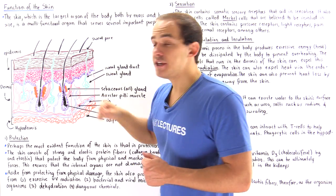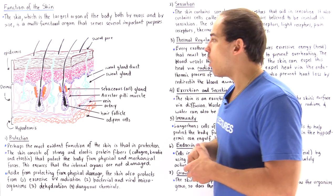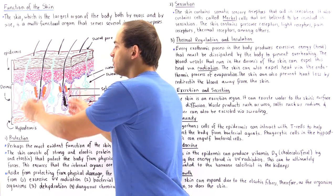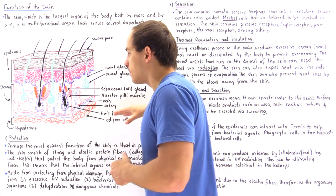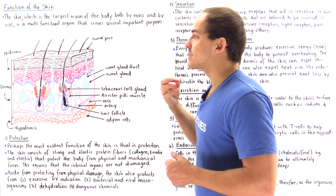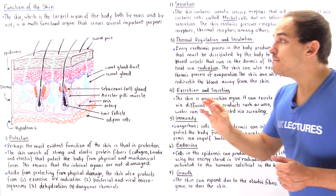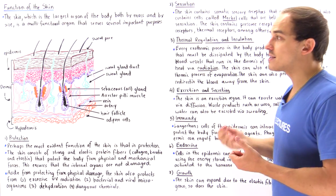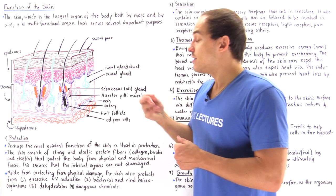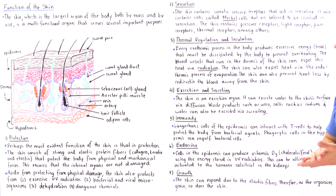Sweat glands produce sweat, which consists predominantly of water. As water reaches the surface of the skin, the heat radiating from blood moving through the blood vessels is used to vaporize that water — an endothermic process. Because water has a high specific heat capacity, this is a particularly effective way to regulate the core temperature and maintain homeostasis.